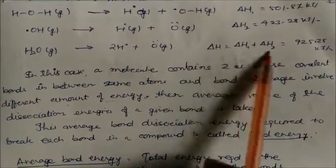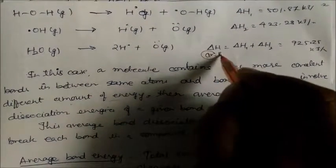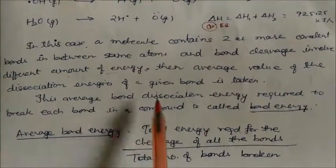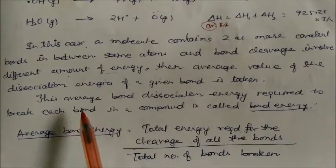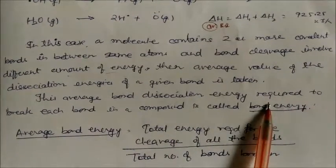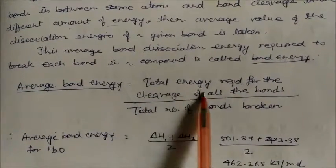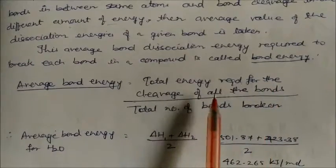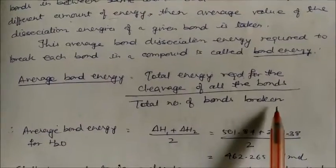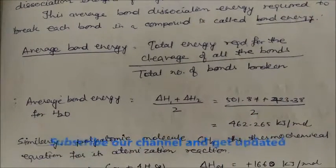This average is called average bond energy — not simply bond energy. The average bond dissociation energy required to break each bond in a compound is the total energy required for cleavage of all bonds divided by the total number of bonds broken.